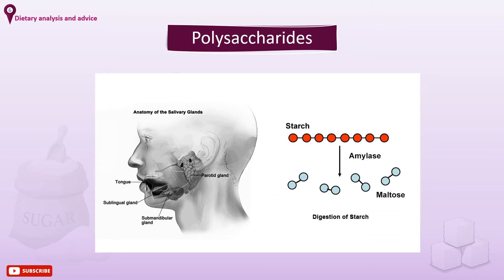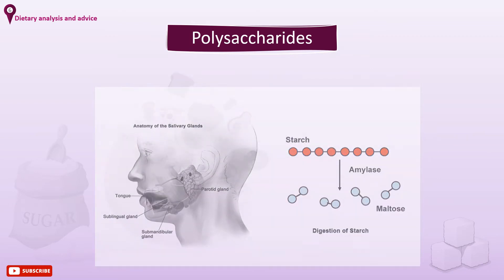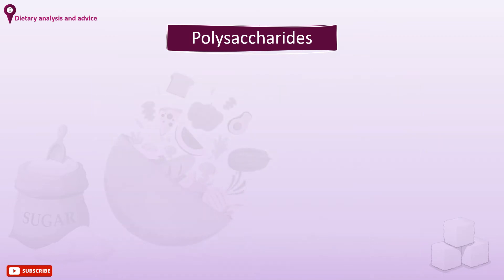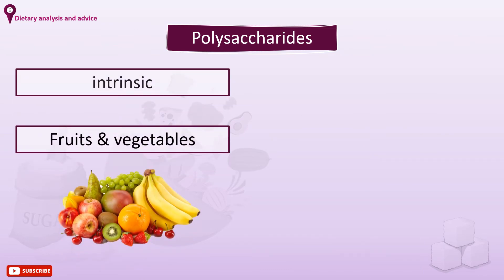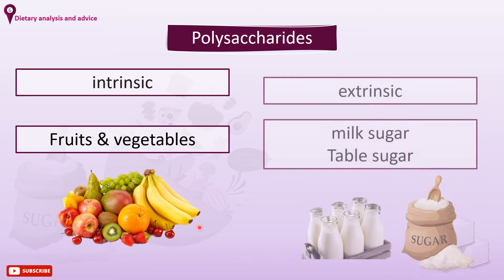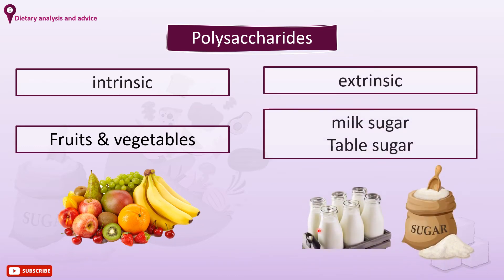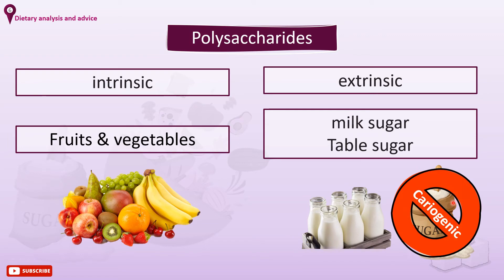Dietary sugars have been classified as intrinsic and extrinsic. Intrinsic sugars are part of the cells in a food, like in vegetables and fruits. Extrinsic sugars include milk sugar and non-milk extrinsic sugars like table sugar. Both intrinsic and extrinsic sugars may cause decay, although non-milk extrinsic sugars are most cariogenic.